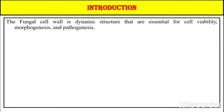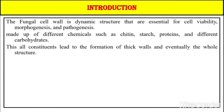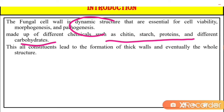The fungal cell wall is a dynamic structure that is essential for cell viability, morphogenesis, and pathogenesis. It is made up of different chemicals such as chitin, starch, proteins, and different carbohydrates. These constituents lead to the formation of thick walls and eventually the whole structure. Due to this dynamic nature, the cell wall provides cell viability, morphogenesis, and pathogenesis to the fungus.